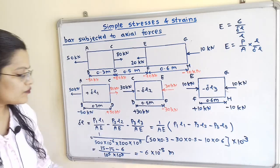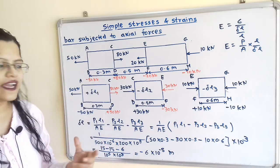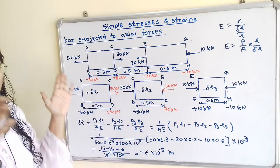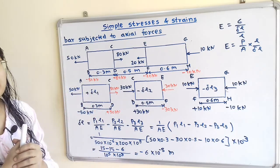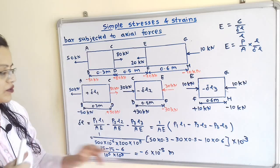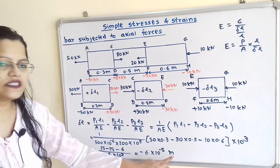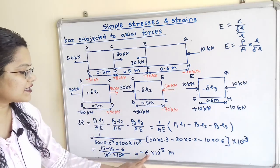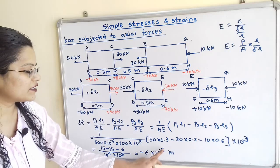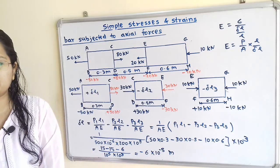The negative sign indicates there is contraction in the bar. The length contracted is 6 × 10⁻⁵ meter.